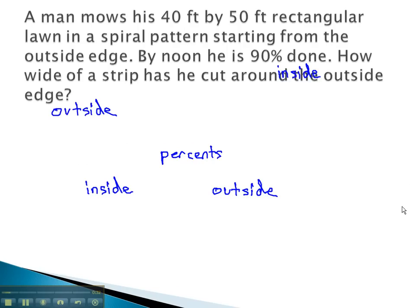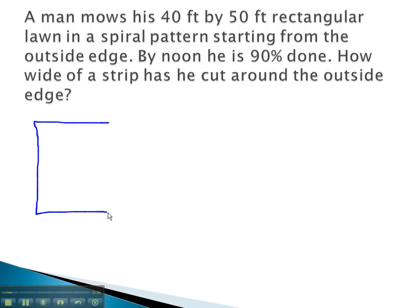For example, in this problem, a man has a 40 foot by 50 foot rectangular lawn. He mows, spiraling in towards the center, and by noon, he is 90% done.